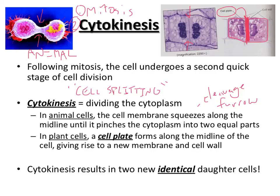The most important takeaway from all this is the result of mitosis: mitosis and cytokinesis result in two new cells, each identical to each other and to the parent cell in terms of their genes and DNA. Next time we'll start talking about how we regulate and control this whole cell division process.